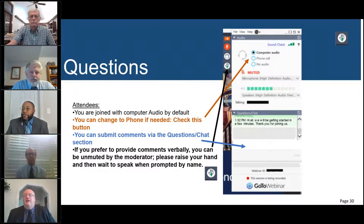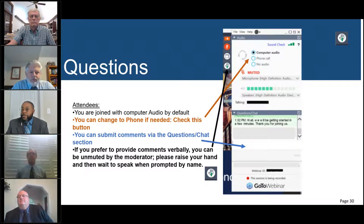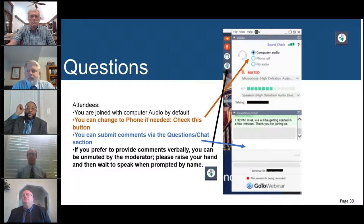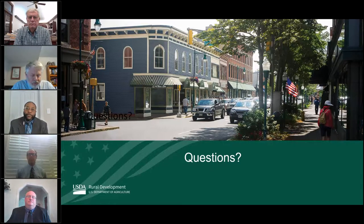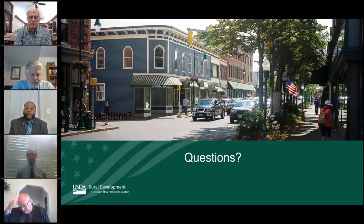We've got several questions already in the question box. The first one, Bill: this person would like you to discuss the adjacent communities of 50,000 or more from the Rurality Worksheet, and how that factors in.